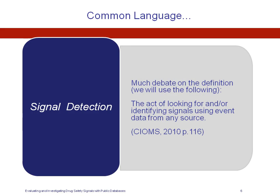Signal detection is simply the act of looking for these various signals. The CIOMS 8 Working Group publication is very clear that while the use of comprehensive and large public database sets are interesting and cutting edge right now, the traditional individual case safety reports and periodic report assessments really should not be overshadowed by automated signal detection methods such as Empirica Signal. The traditional approach to signal detection is just as important as the automated methods.